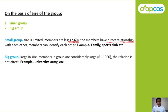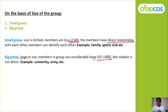In a small group, the relationship is informal and members can identify each other. For example, family, sports club, etc. In a big group, it is very large in size and members are present in more number. The number of members ranges from 61 to 1000 or more. The relationship is not direct — unlike in small groups where members can identify each other, in big groups that is not the case.